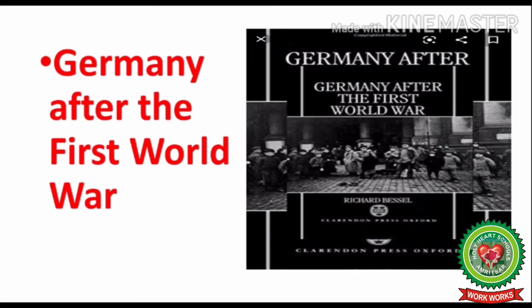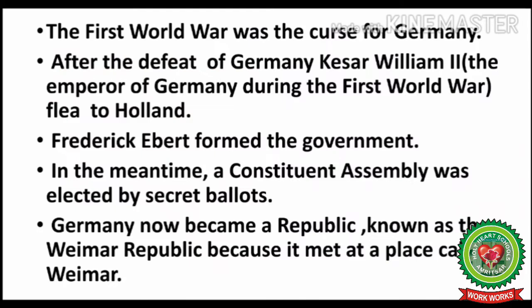Let us now discuss the condition of Germany after the First World War. The war was a curse for Germany. After Germany's defeat, Kaiser Wilhelm II — the Emperor of Germany during the war — fled to Holland, which is present-day Netherlands. Frederick Ebert formed the government, and a constituent assembly was elected by secret ballot. For the first time, a democratic government was to be formed in Germany after the appeal of President Wilson of America.